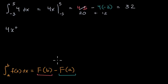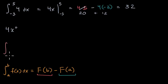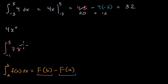Let's do another example where we're going to use the reverse power rule. We want to find the definite integral going from negative one to three of seven x squared dx. What is this going to be equal to?